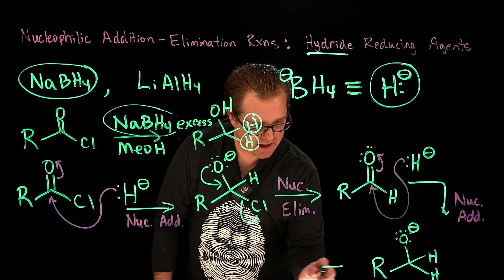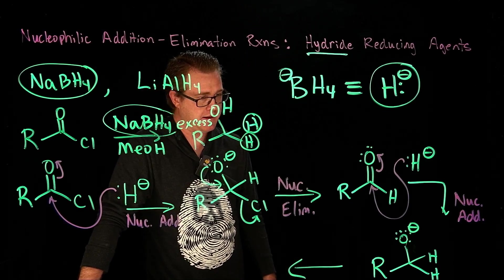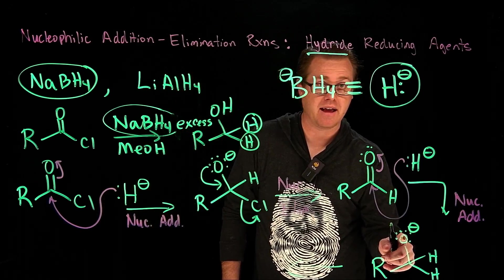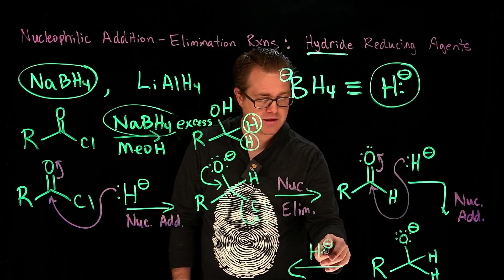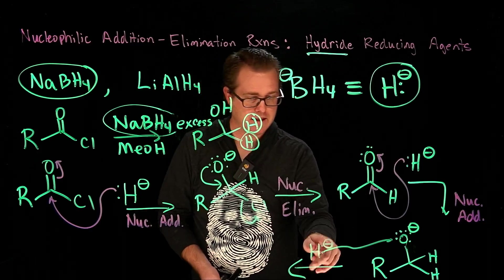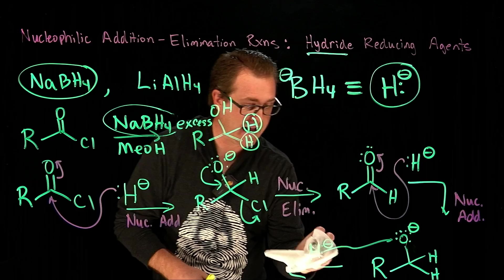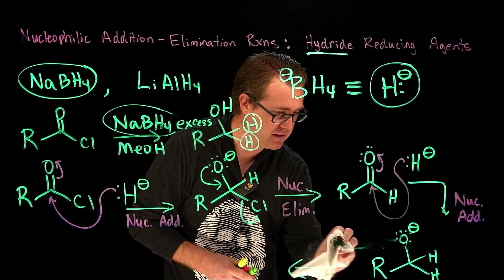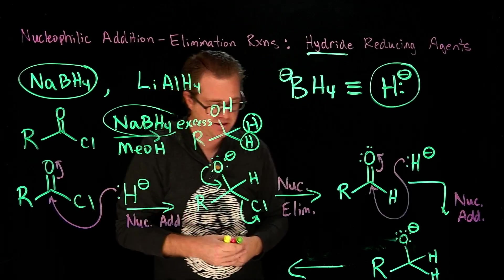And now the last step right here is we have to now get a proton onto that oxygen. Now do we use another hydride and say that's going to come in and attack the oxygen? No. That's negatively charged, that's negatively charged. There's going to be clash right there, electronic clash. So we're not going to use another hydride. Well, what other proton source do we have? We have our methanol right there.